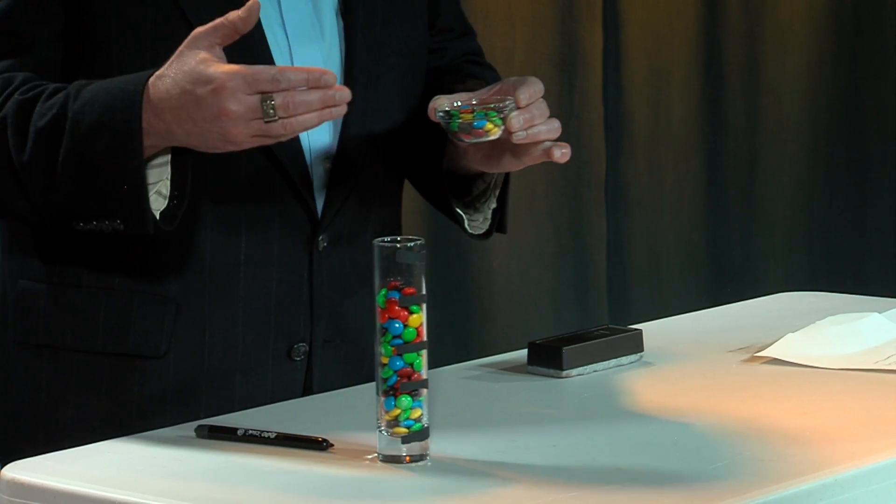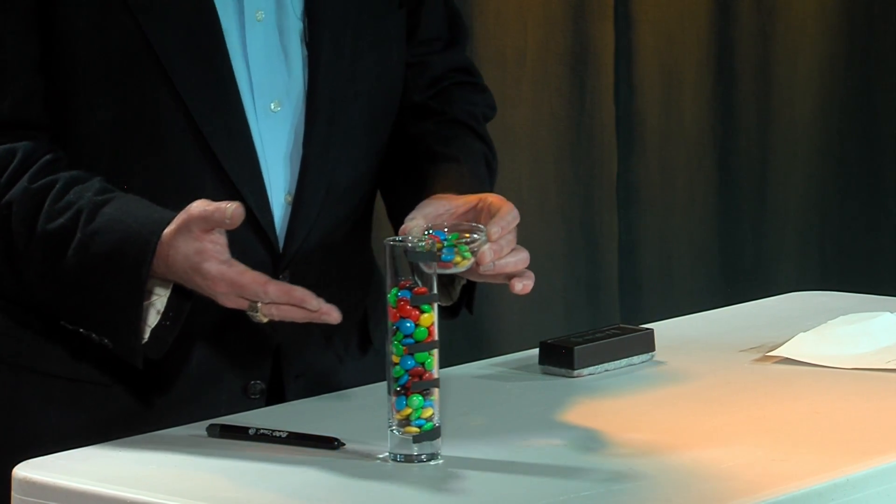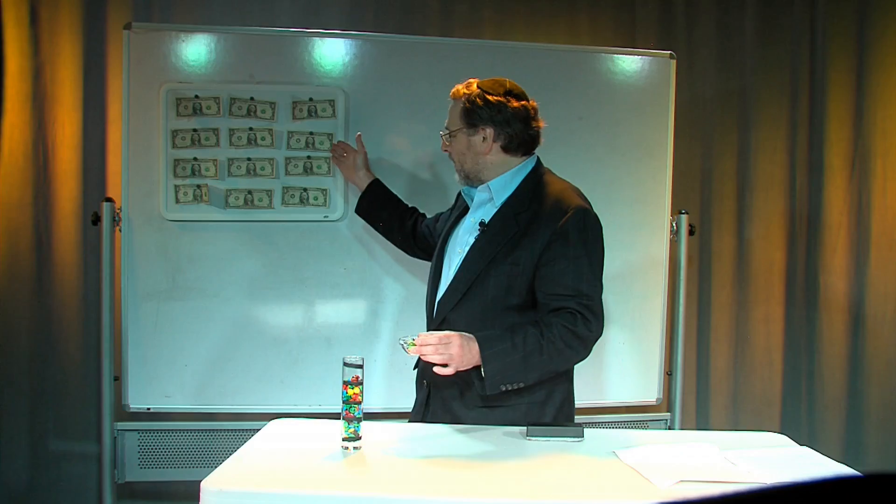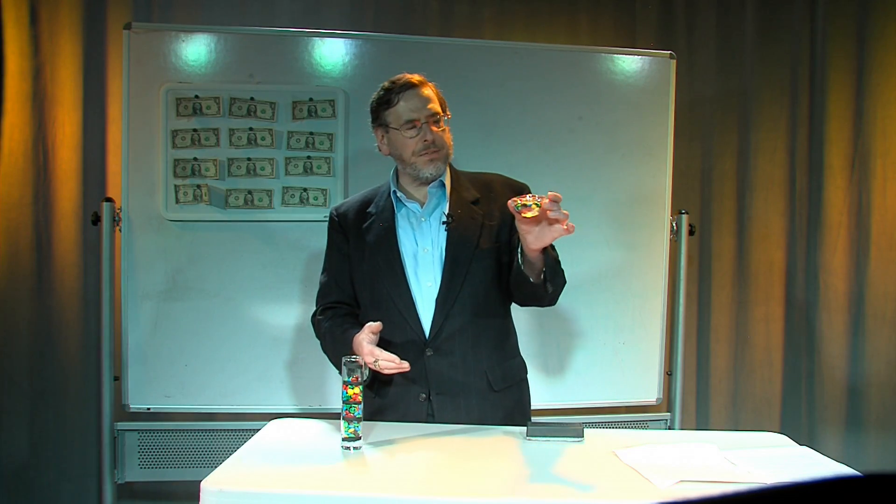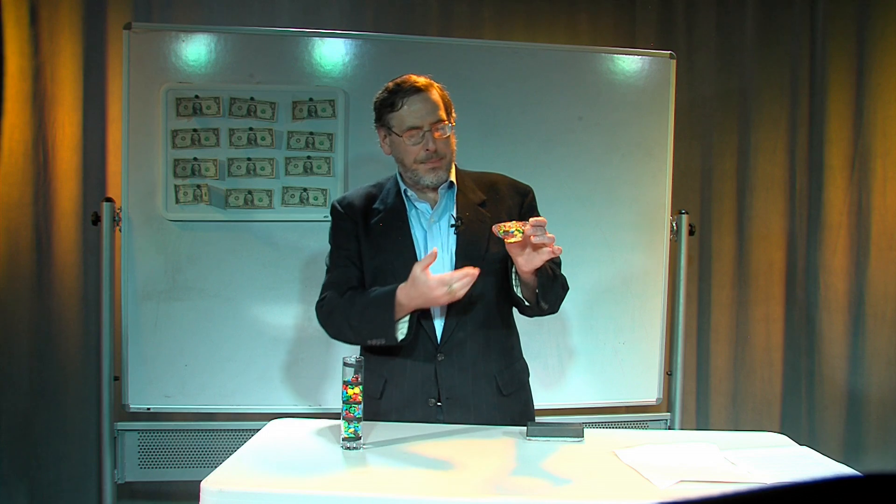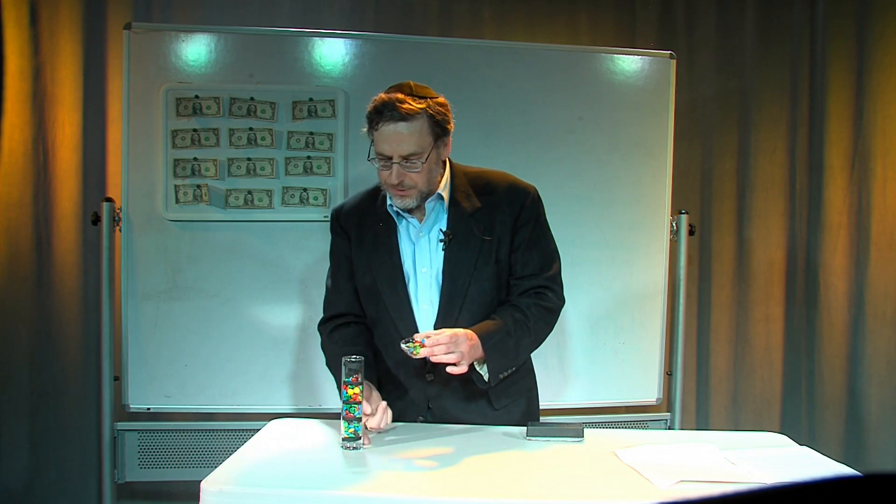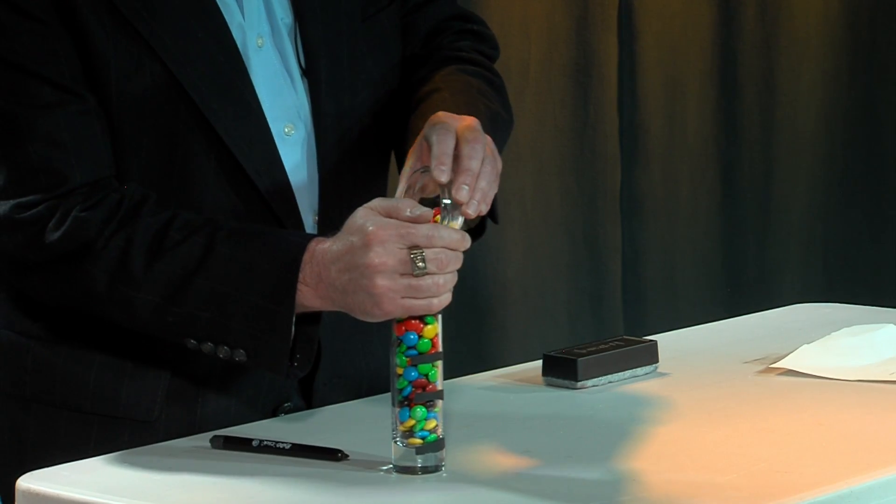So we know that this much candy costs 12 dollars. So we have to know what proportion of the candy we're trying to buy here. So I have to put it in so we can measure it all the way from zero, get the absolute measure.